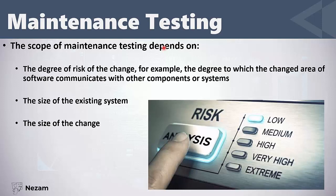The scope of maintenance testing — meaning how much maintenance testing will we perform — depends on several factors. For a large system it is very hard to perform a full maintenance test on the whole system. The scope depends on: the degree of risk of the change (does the changed area communicate with other components or have a high impact on them?), the size of the system (if small we can do all maintenance tests; if large we need risk analysis and prioritization), and the size of the change (a small change means small maintenance tests, but a large change means we will need regression testing of many parts).